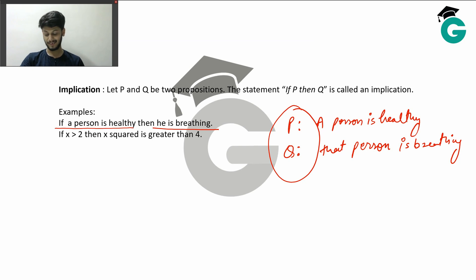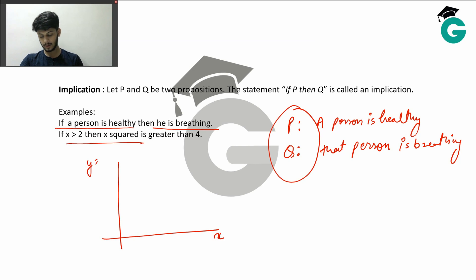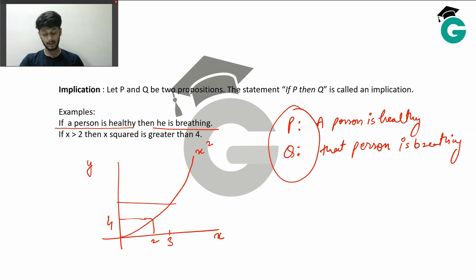He will probably die otherwise. Another example: if X is greater than 2, then X squared is greater than 4. Suppose this is Y equals X squared — when X is 2, Y is 4, and when X is 3, Y is definitely greater than 4, like 9. So this implication is also true.